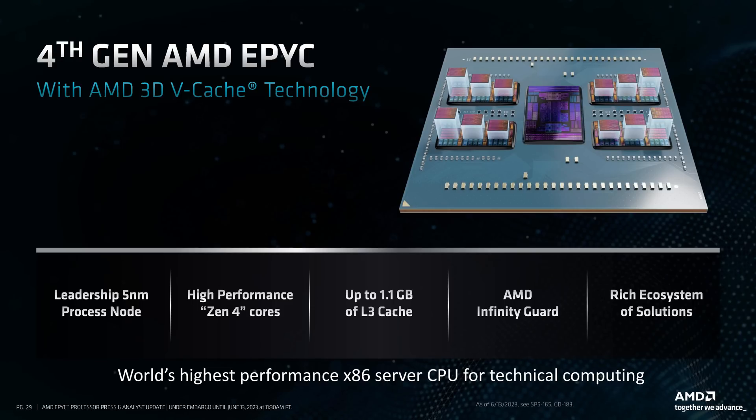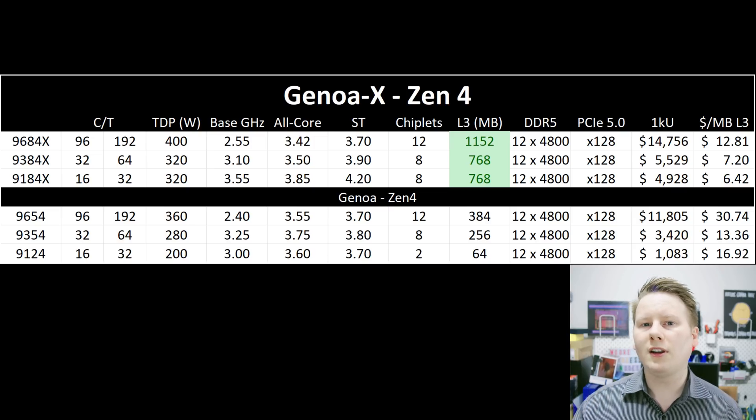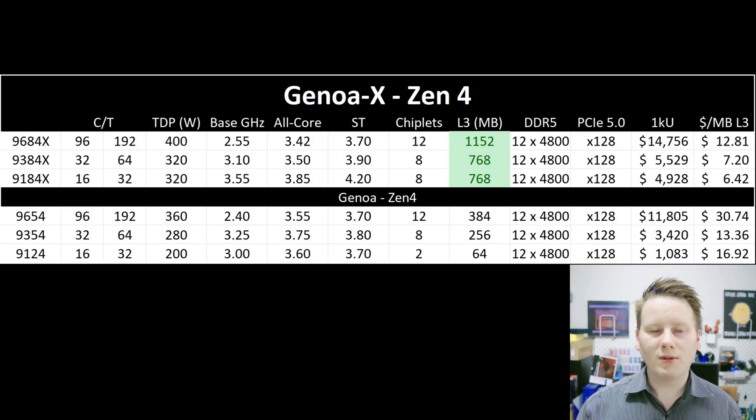The other CPU announcement was Genoa X — the vCache-enabled version of Genoa, the mainline EPYC CPU. We already had this in the previous generation: Milan goes to Milan X, where each of the core chiplets gets an extra 64 megabytes of L3 cache. Same thing here with Genoa X. You've got up to 96 cores and 1.152 gigabytes of L3 cache across the whole chip. These are designed for technical computing — computational fluid dynamics, EDA tools, electronic design automation — basically any workload where having the most L3 cache per core is important. There are going to be three SKUs, with the top-of-the-line 96-core part offering 192 threads, 12 channels of DDR5 from 800, 128 PCIe lanes, and 400 watts.